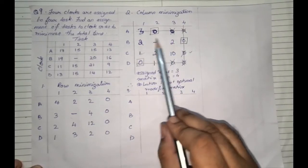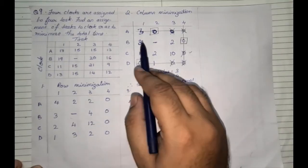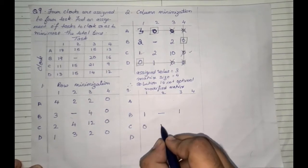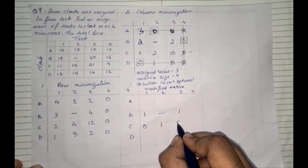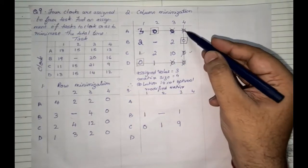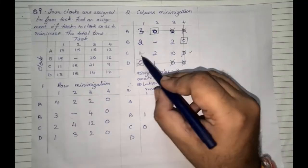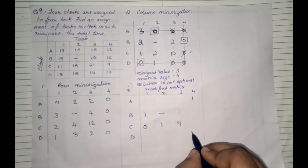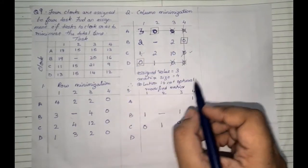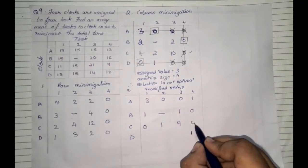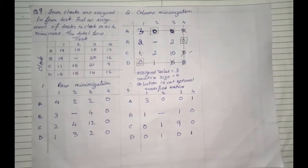That lowest value of 1 gets subtracted from all other unmarked values: 2 minus 1 is 1, 2 minus 1 is 1, 1 minus 1 is 0, 2 minus 1 is 1, and 10 minus 1 is 9. Wherever the lines have intersected, that value gets added by the lowest unmarked value: 0 plus 1 is 1, and again 0 plus 1 is 1. All other values remain as they are: 3, 0, 0, 0, 0, 0, 0, 1, and 0. This is how we create our modified matrix.